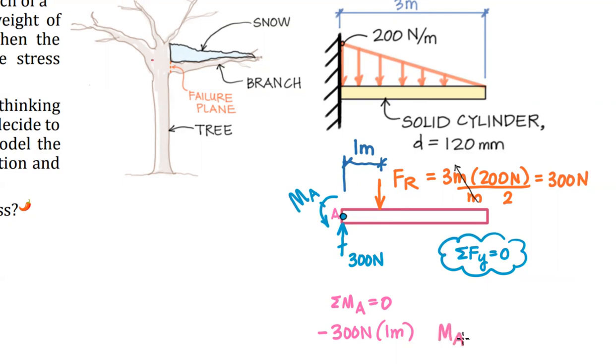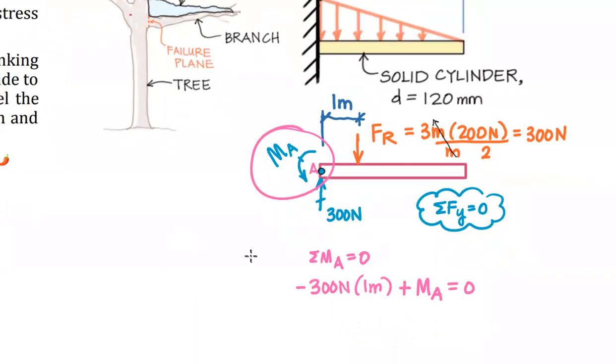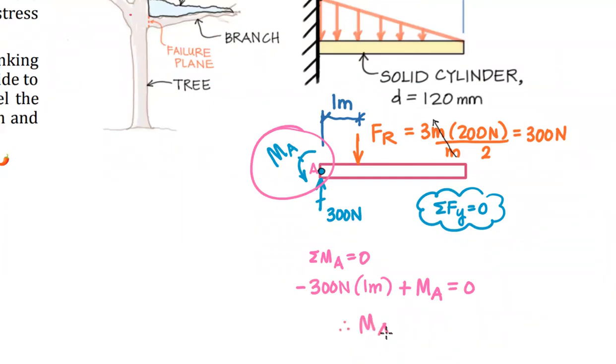M sub A, that is an unknown. We've made an assumption as to the direction. That one is a counterclockwise or thumbs up if you're using the right-hand rule. Either way, you give that a positive sign, set that equal to zero. Solve this simple equation and state that the moment, the reacting moment at A, at the leftmost plane, the fixed plane, is equal to 300 newtons times meters.